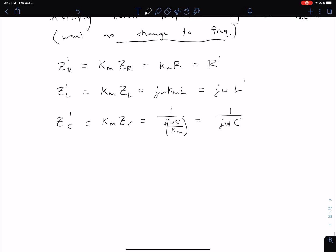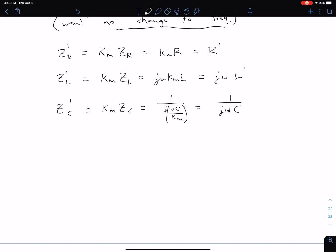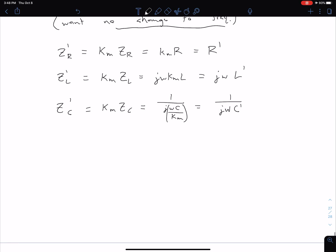Comparing all of these, we can write what our R', L', and C' are by comparing these impedance equations. For R', this is just KmR. For our impedance, L' equals Km times L. These are just coming from inspection here. For capacitance, C' equals C divided by Km. By design, our new frequency ω' is the same as our old frequency ω.